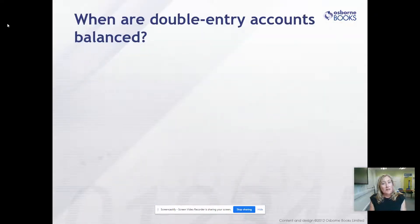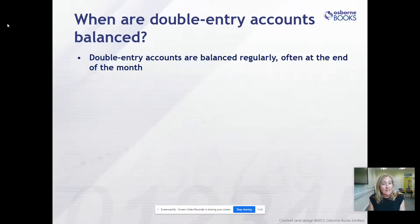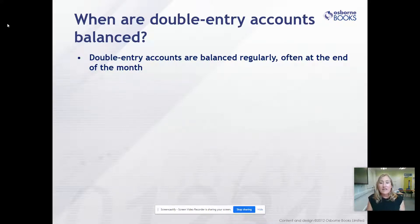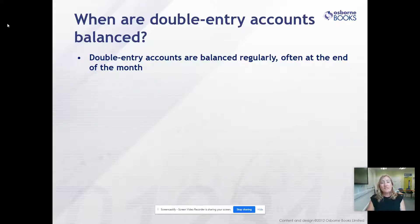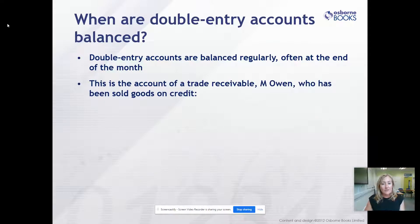When are the double entry accounts balanced? Usually this is done on a monthly basis. At the end of every month, all of the T-accounts are balanced. A trial balance is drawn up from those balances, and if the debits and the credits are equal, we can be assured that the double entry is correct and the arithmetic is correct. It might not mean that everything's in the right place, but the debits and credits are equal. This will certainly need to be done at the end of every year in order to produce the final accounts of the business.